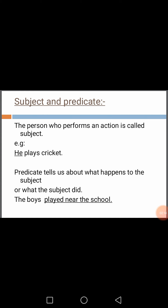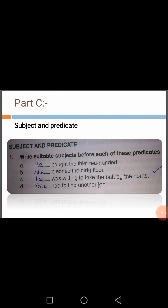He plays cricket — 'he' is subject, 'plays cricket' is predicate. The boys are subject, 'played near the school' is predicate. Now, part C: write suitable subjects before each of these predicates. There are predicates and you will write suitable subjects before each of them.